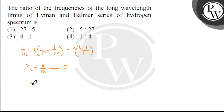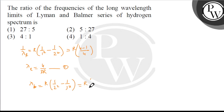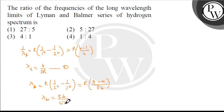Balmer series ke liye hoga: 1 upon lambda_B is equal to R into (1/2² minus 1/3²), which is equal to R into (1/4 minus 1/9) = R into (9 minus 4)/36. Yoh hoga 5R/36, so lambda_B is equal to 36 upon 5R. This is our second equation.